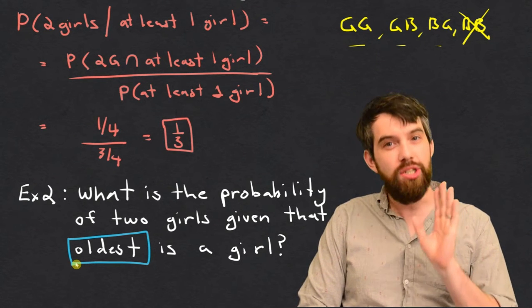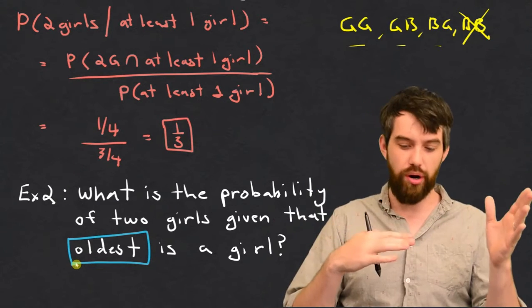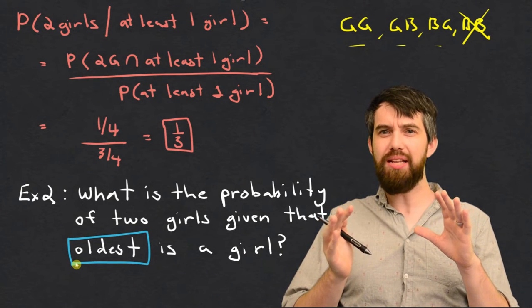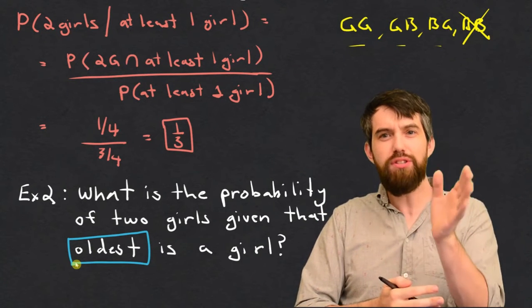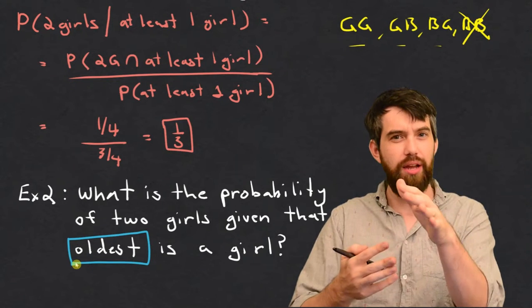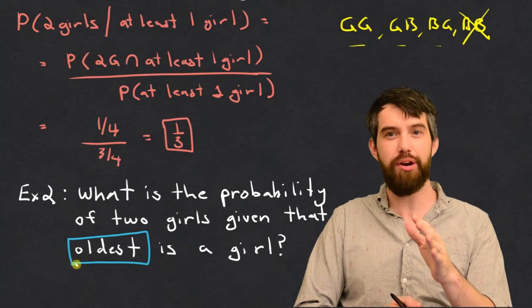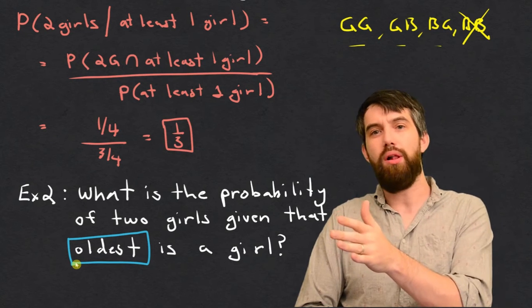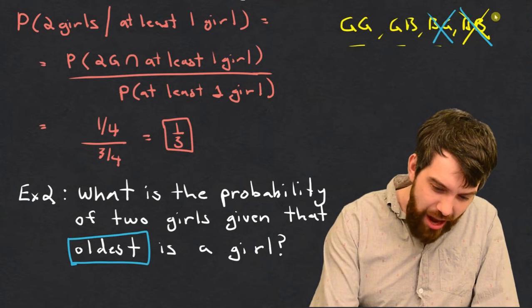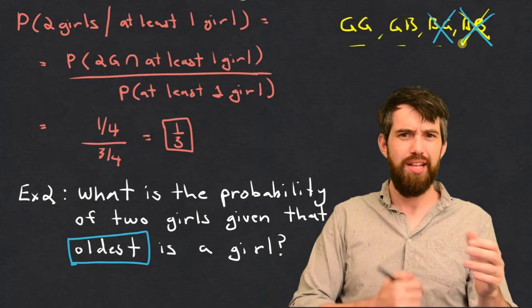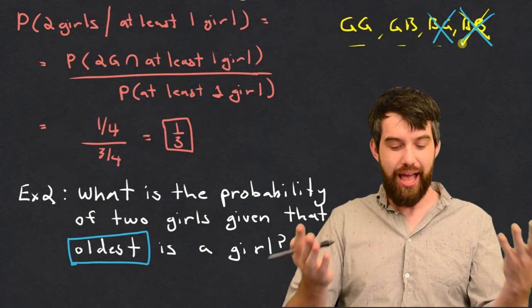It turns out it does change things. Let's go back to the four possibilities: girl-girl, girl-boy, boy-girl, and boy-boy. Because children come out in an order, the first entry tells you what the older child is and the second what the younger is. In girl-girl and girl-boy, the oldest child is a girl. But in boy-girl and boy-boy, the oldest child is a boy. So we eliminate boy-girl and boy-boy — two cases. Without even writing it down, I can guess the answer here is going to be one-half. There's a difference between saying 'at least one' and saying 'the oldest one is a girl.'